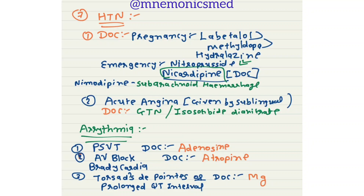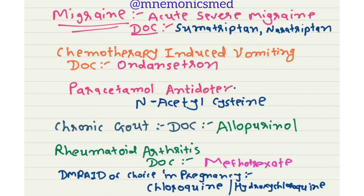For migraine or acute severe migraine, drug of choice is sumatriptan or naratriptan. For chemotherapy-induced vomiting, drug of choice is ondansetron. For paracetamol antidote, it is N-acetylcysteine. For chronic gout, drug of choice is allopurinol. For rheumatoid arthritis, drug of choice is methotrexate. DMARD of choice in pregnancy is chloroquine or hydroxychloroquine.